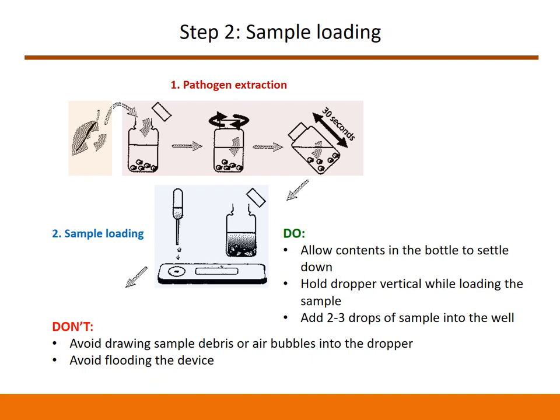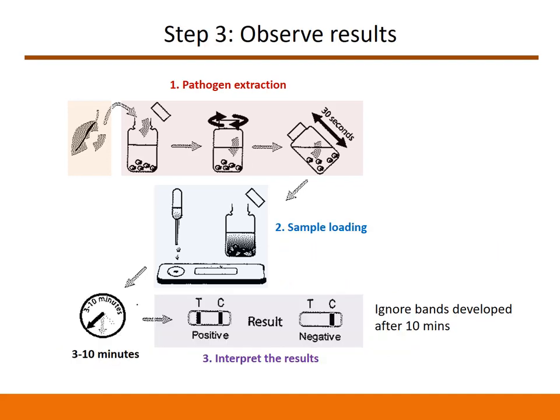Sample debris or air bubbles can interfere with the test. So after you are done shaking the bottle, let it sit undisturbed for 30 seconds to allow debris to settle down. Remove the lateral flow device from the sealed pouch and keep it on a flat surface. Using the dropper that comes with the kit, carefully draw up the liquid and start the test by adding two to three drops of the liquid to the circular sample well. Make sure you don't exceed over three drops. The result bands will start to appear after three minutes. This test is completed in under 10 minutes, so make sure to read the results within 10 minutes of sample loading and ignore any changes that may occur after this time.